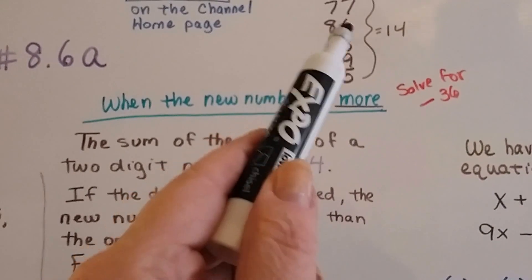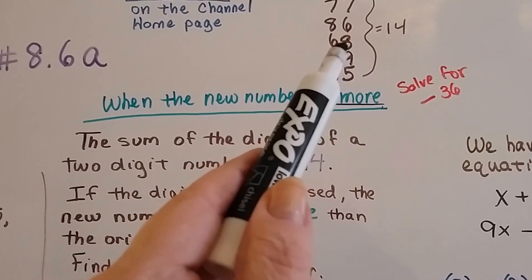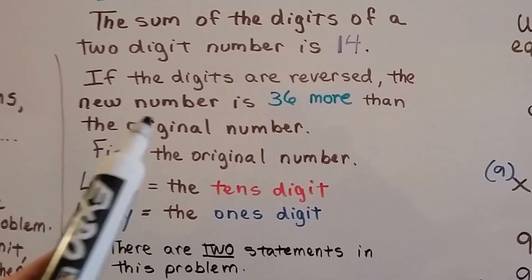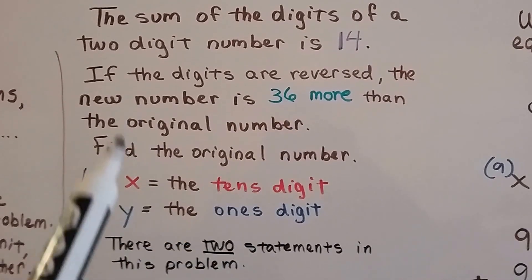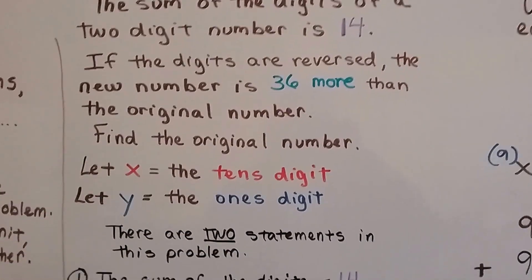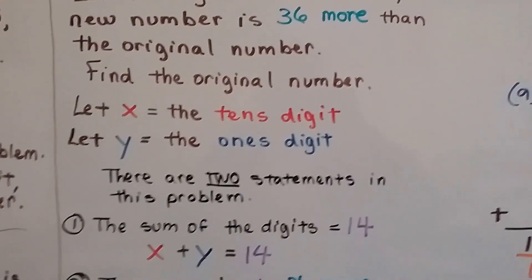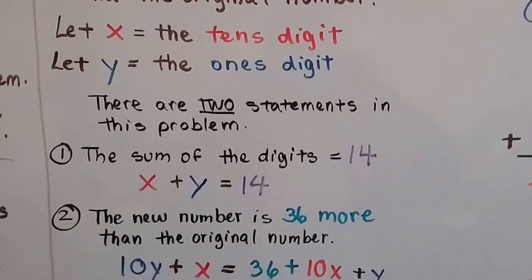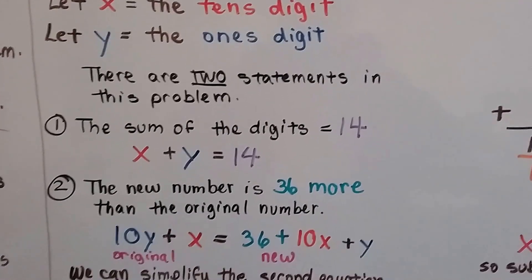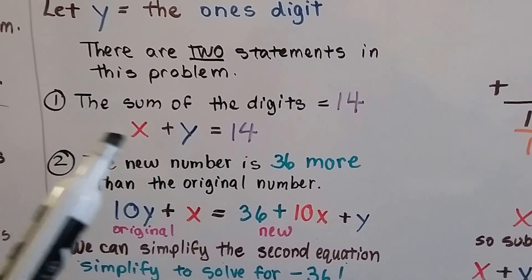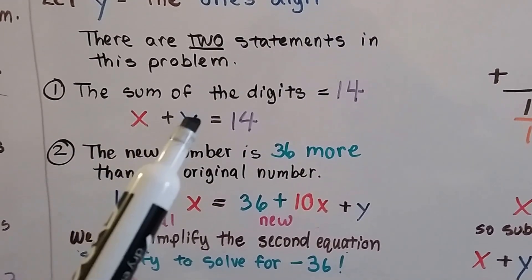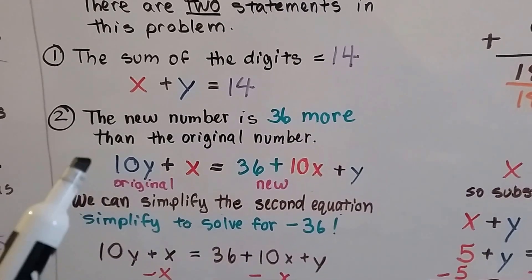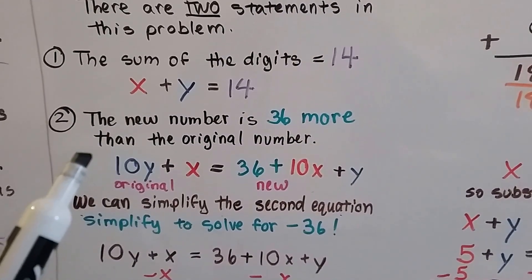And if the digits are reversed, the new number is 36 more than the original number. So if we reversed 86 to be 68, or 59 to be 95, the new number is going to be 36 more than the original number, and it says find the original number. So we can let x be the tens digit, and y be the ones digit. We have two statements in this problem: the sum of the digits equals 14, and our new number is 36 more than the original number.